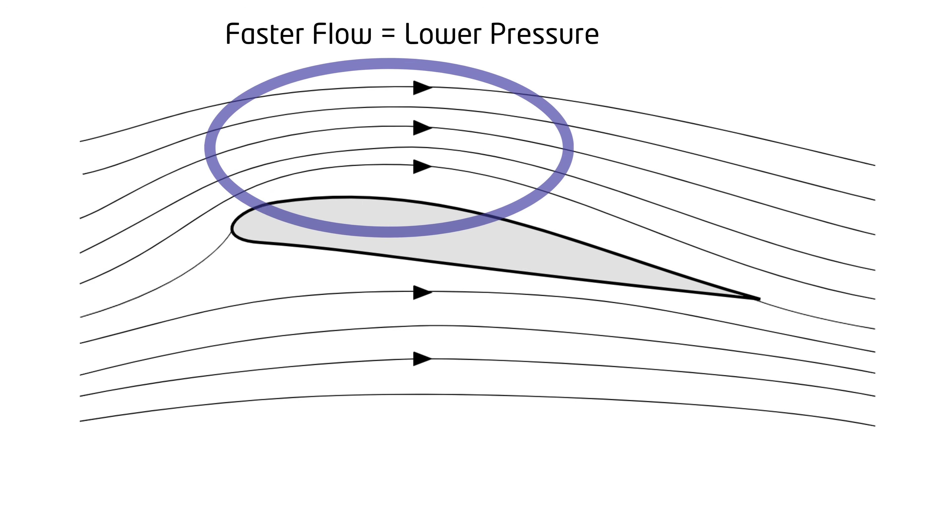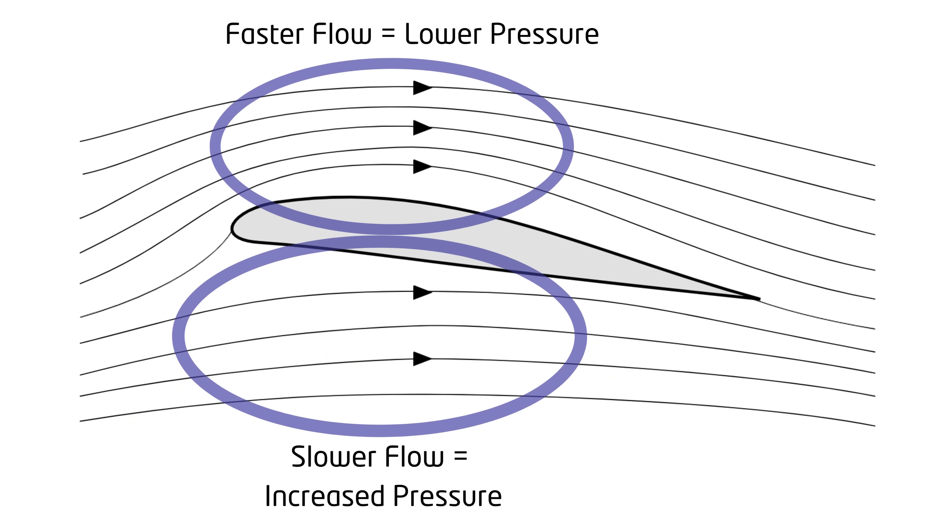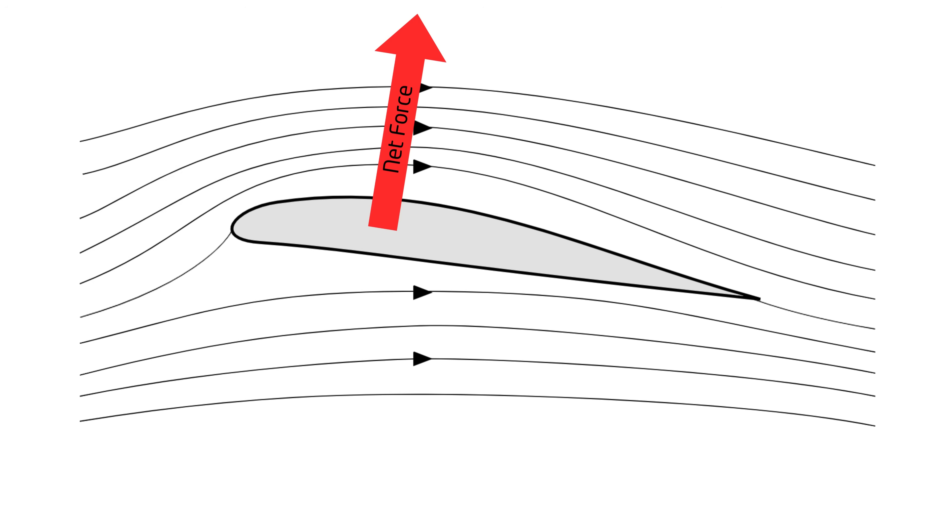Notice the inverse happens below the airfoil. The flow is forced to pass over a larger area, making it slow down, increasing its pressure. Since there is more pressure below the airfoil than above it, there will be a net force upwards, which is the force that sustains flight.